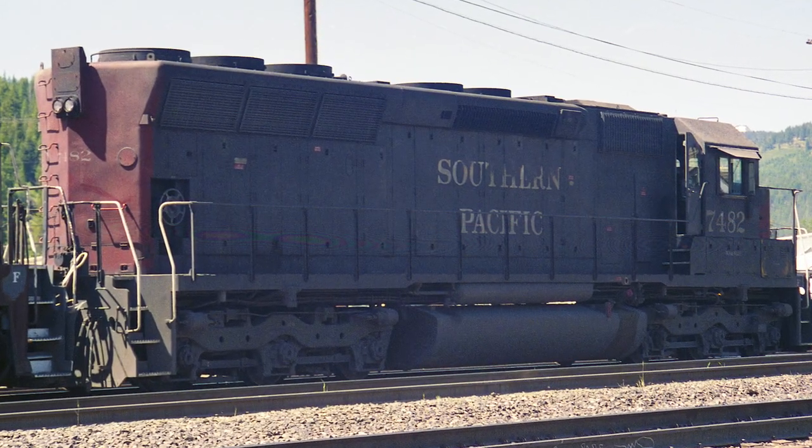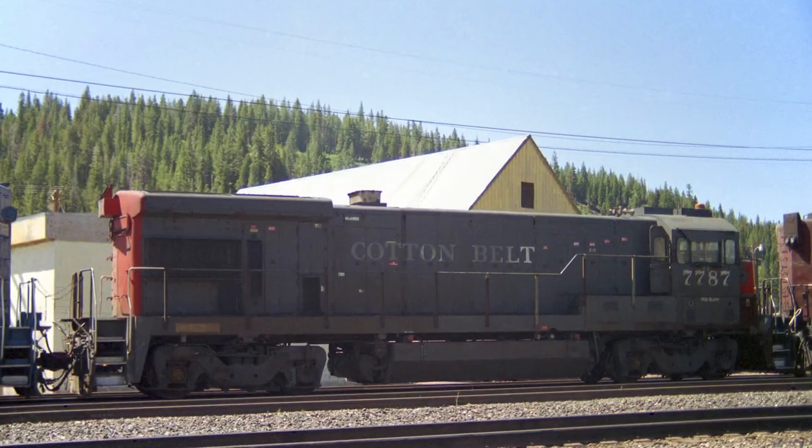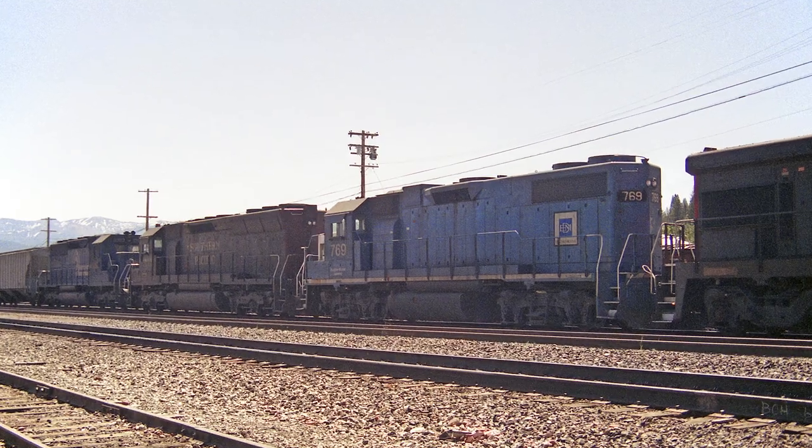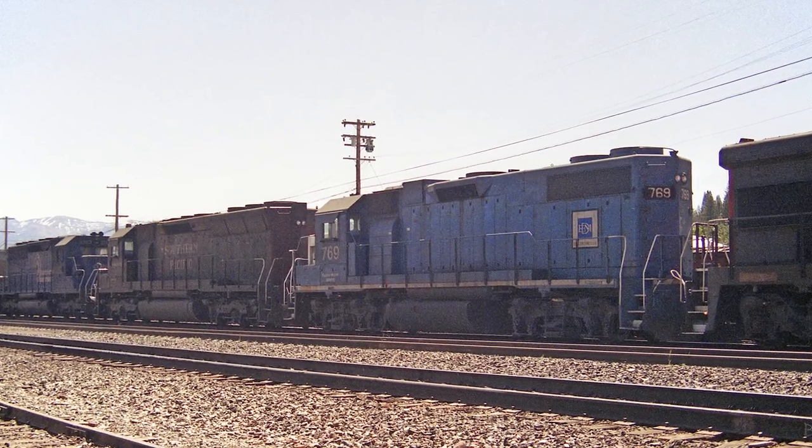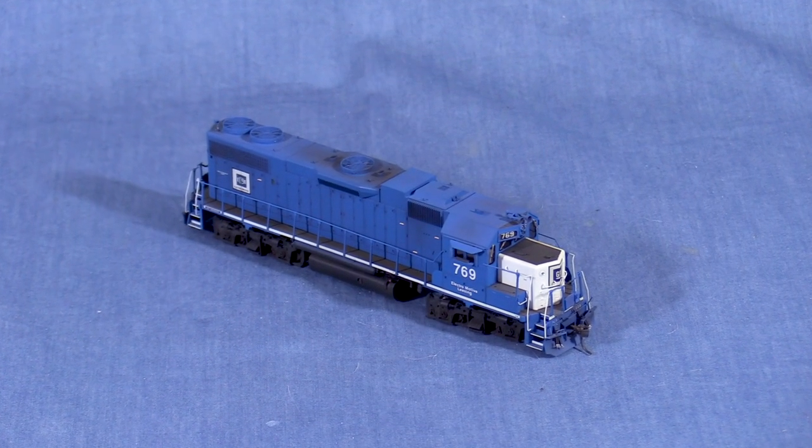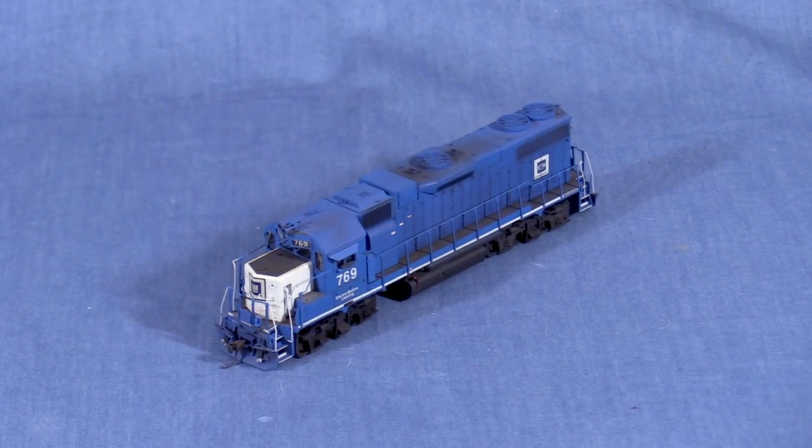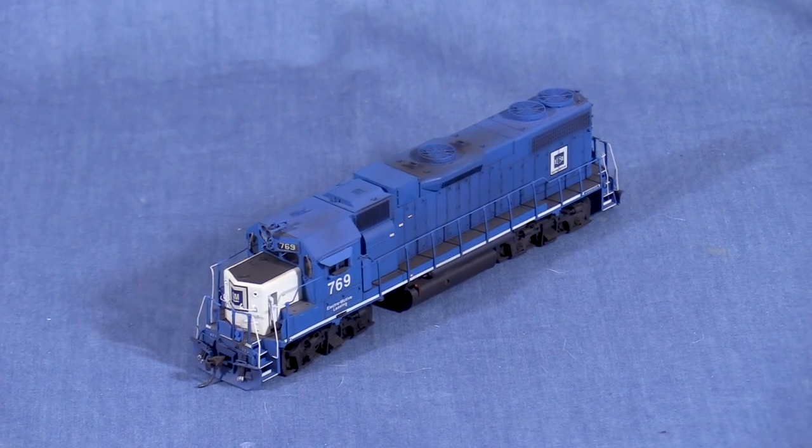The train had two SP SD45Rs, a Cotton Belt B30-7, a Conrail SD40, and a leased EMDX GP38-2. I already completed the model of EMDX 769 prior to starting this build. It's based on an HO scale Proto 2000 GP38-2 model.